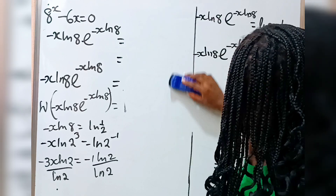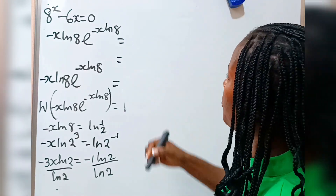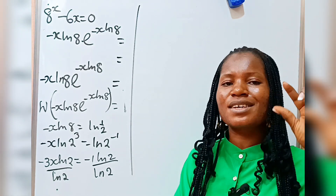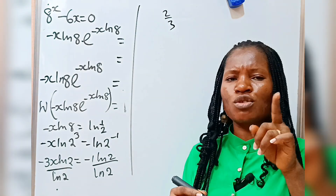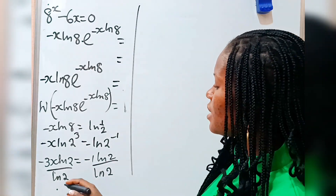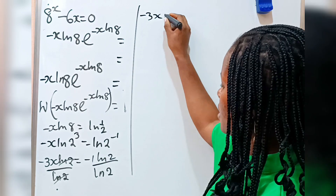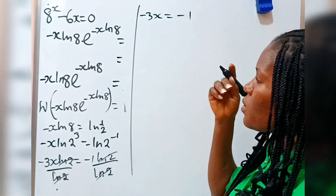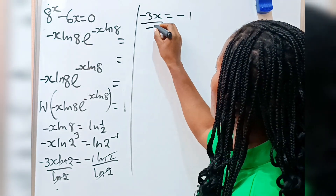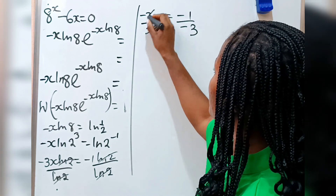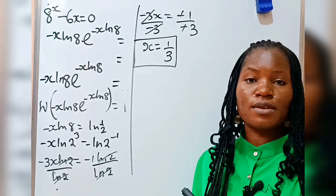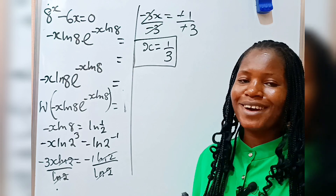Now our answer is almost there. Though there is another value of x — which I would like you to get for me in the comment section — which is 2 over 3. I would like you to use your own method and get that particular value. Because I am going to get only one value here. When we cancel ln 2, we have minus 3x is equal to minus 1. To get the value of x, we divide both sides by minus 3. We cancel minus 3, and we have x is equal to 1 over 3.